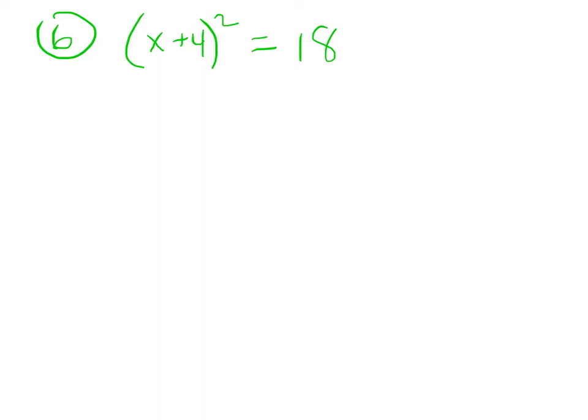So I have an equation that looks like some stuff squared equals 18. And so to undo that squaring, I'm just going to square root both sides.